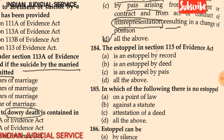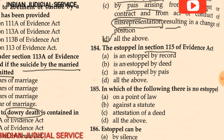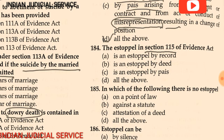Question 184: The estoppel in section 115 of the Evidence Act is — (A) an estoppel by record, (B) an estoppel by deed, (C) an estoppel by pais, (D) all of the above. The answer is option C: it is an estoppel by pais.